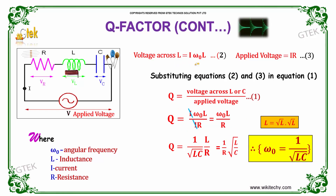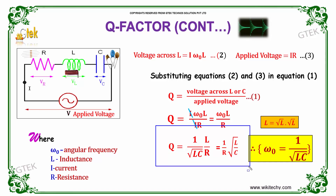The voltage across L is I times omega-0 times L, and the applied voltage is equal to I times R. Substituting these, Q equals voltage across L divided by applied voltage, which gives omega-0 L divided by R, with I cancelling out. Since omega-0 equals 1 over the square root of LC, substituting gives Q equal to (1/R) times the square root of L over C.